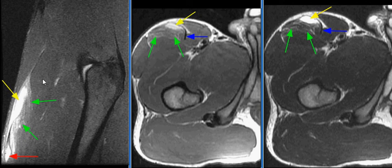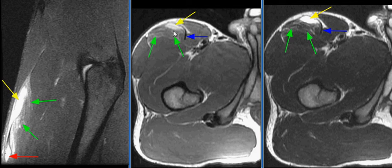Of the rectus femoris muscle, there is a partial intersubstance tear of the direct head tendon at its interface with the anterior fascia of the mid thigh. Two intramuscular hematomas are seen. The most proximal hematoma is anteriorly within the muscle belly.